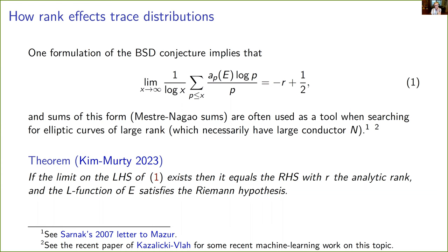We expect the minimalist conjecture predicts that on average half the elliptic curves over Q should have rank 0, the other half rank 1, and the rest — a negligible proportion — have rank greater than 1. So the Mester-Nagao sum, whether positive or negative, is going to tell you whether you have rank 0 or rank 1. Recently So Young Kim and Ram Murthy proved a result establishing that if this limit converges, it has to converge to the right-hand side. They also proved another consequence: the L-function of the elliptic curve would also have to satisfy the Riemann hypothesis. That's something we don't expect to prove anytime soon, which perhaps suggests proving this equality may be difficult.